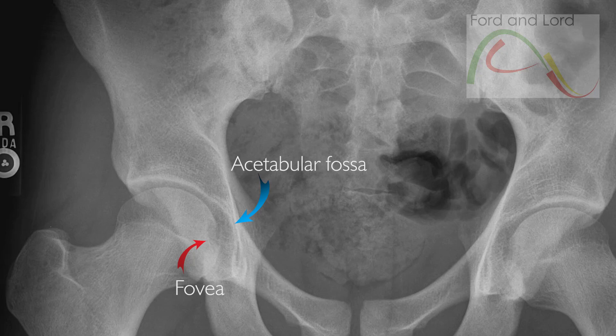So the ligament of the head of the femur is located between the fovea and this bulge in the acetabulum.